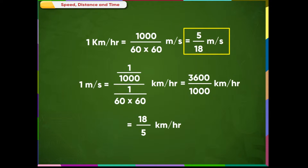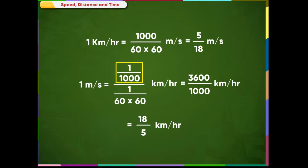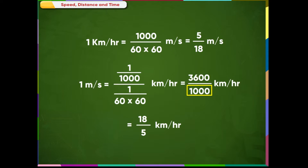1 km per hour equals 5/18 metres per second. Whereas 1 metre per second equals 1 divided by (1000/3600), which equals 3600 divided by 1000, which equals 18/5 km per hour.